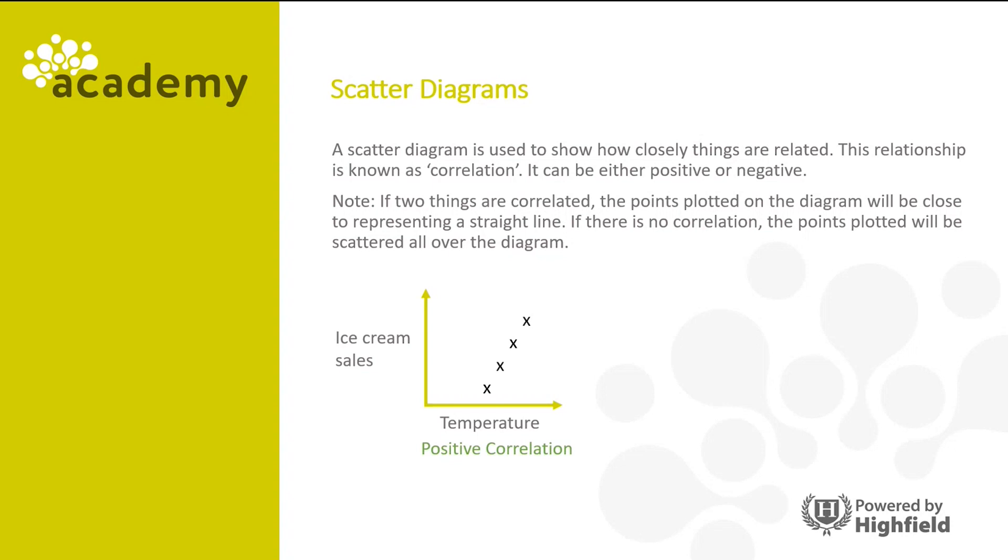Now this is an example of positive correlation. There is a straight line roughly, and as one value increases, the other value increases.